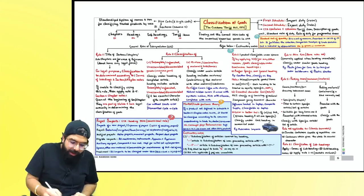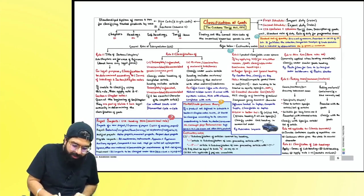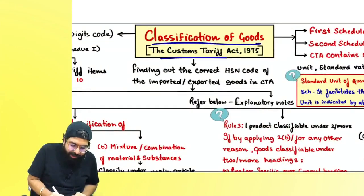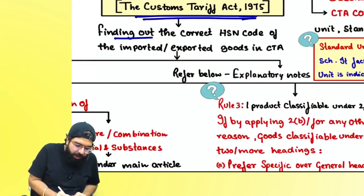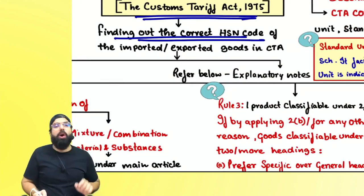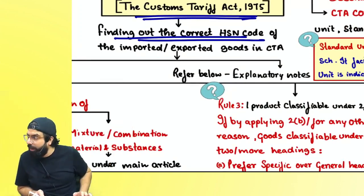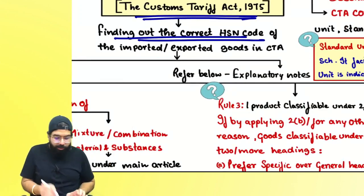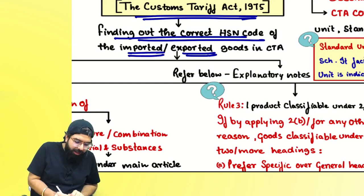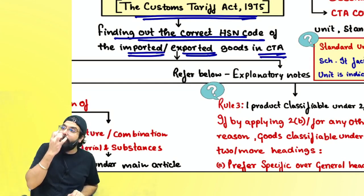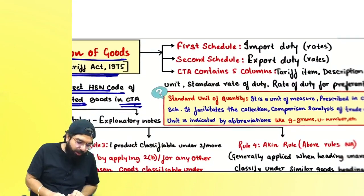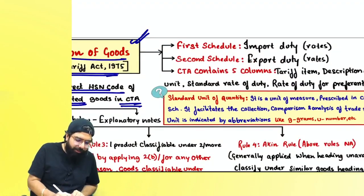Classification means in the Custom Tariff Act, you are going ahead and finding out the correct HSN code of your imported or exported goods. Which goods you are going to export or what are the imported goods — for that you need to find the correct HSN code. When you look at the Custom Tariff Act...